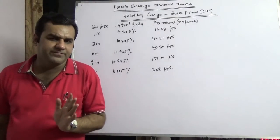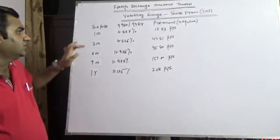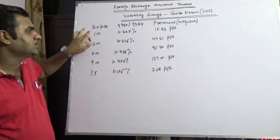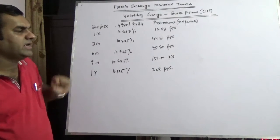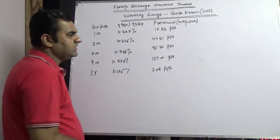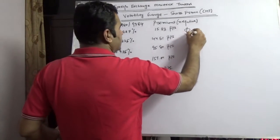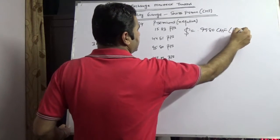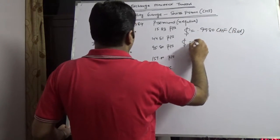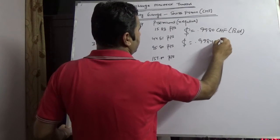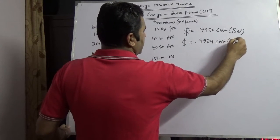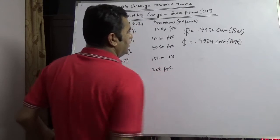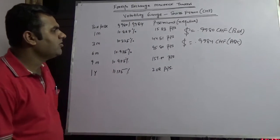Thankfully today the bid ask of Swiss franc is 0.9900 to 0.9984. It effectively means one dollar equals 0.9980 Swiss franc is bid, which means I want to sell, and one dollar is 0.9984 Swiss franc which is ask if I want to buy.